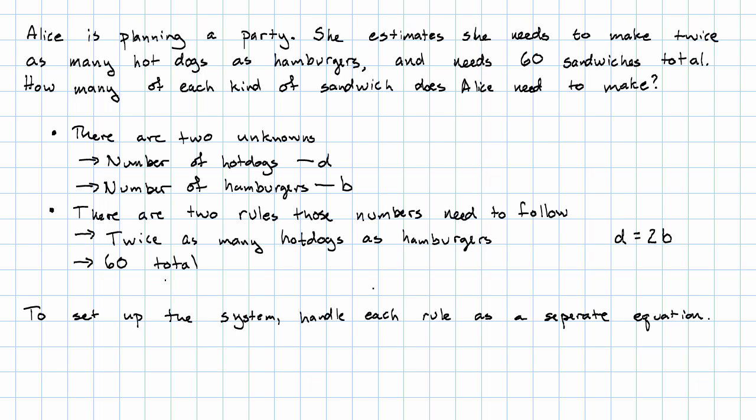The second rule says there are 60 total. That means if I take the number of hot dogs plus the number of hamburgers, I want them to add up to 60. This gives me my system of equations - one equation for each rule.